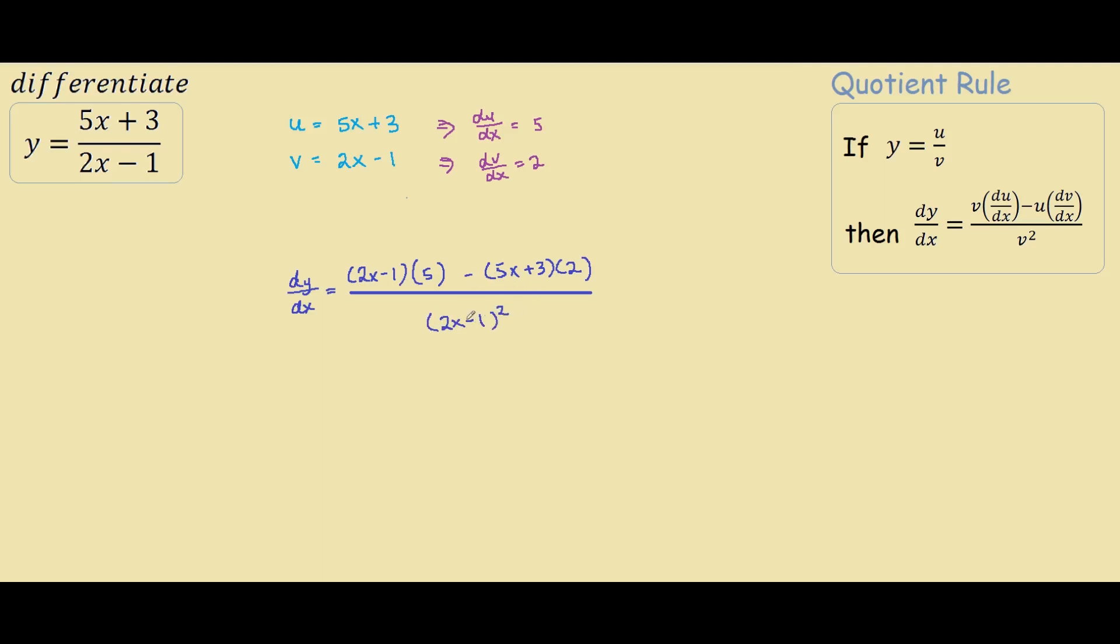So our last step is just to simplify the numerator. As you can see, many things can be simplified up there. We have 2x times 5 is 10x, minus 1 times 5 is negative 5. Over here we have 2 times 5x which is 10x but minus, so minus 10x, and we have negative 2 times 3 so negative 6, all over 2x minus 1 squared.